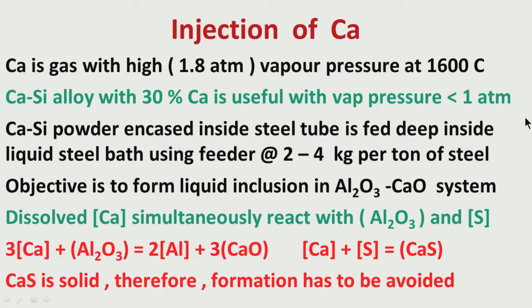Now, how is CaSi injected in steel? This CaSi powder is encased inside a steel tube, and then this tube is fed deep inside the liquid bath using a wire feeder. The CaSi powder encased in a steel tube is wound in the feeder as a spool. So the wire — which is basically a steel tube with calcium-silicon powder inside — is fed through a wire feeder deep inside the liquid steel.